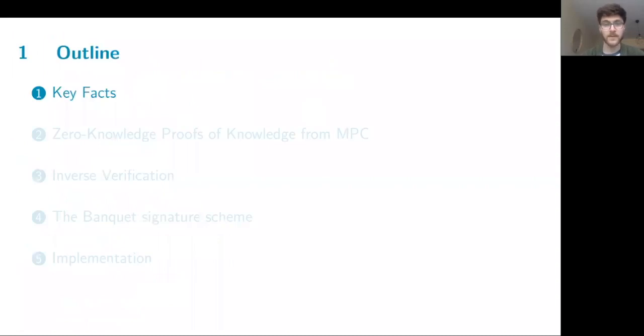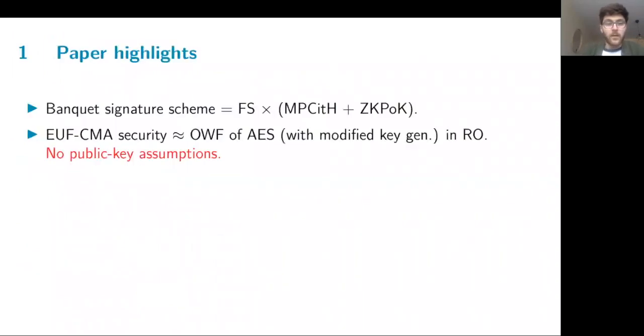First, the key facts. Our Banquet Signature Scheme is built using an MPC-in-the-head based zero-knowledge proof of knowledge, for which we use a Fiat-Shamir transform to achieve non-interactivity. Its EUF-CMA security is based on the one-way function assumption of the AES block cipher, with a slightly modified key generation algorithm in the random oracle model. One key feature here is that it has no public key assumptions, which is the same as for other MPC-in-the-head based signature schemes, which makes it quite attractive.